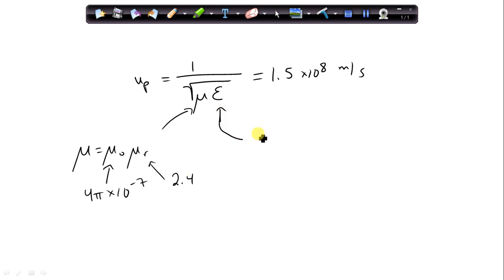And likewise for epsilon we have to plug in epsilon naught times epsilon r. So this is 8.854 times 10 to the minus 12, and epsilon r is what we want to solve for. So now we have every number except for epsilon r. If you solve for epsilon r, you would get 1.67.